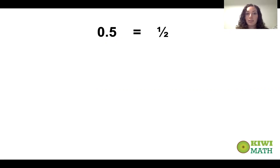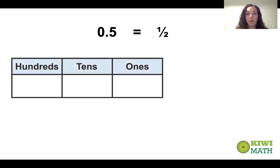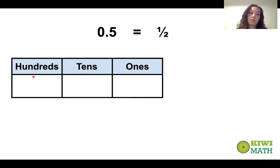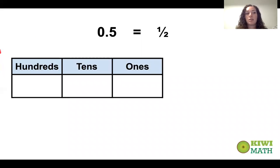Let's think about what we already know about place value. We know there are ones, there are tens — you move over one place to the left, there are hundreds, there are thousands, ten thousands, and it keeps going. As we move to the left, the numbers get bigger.